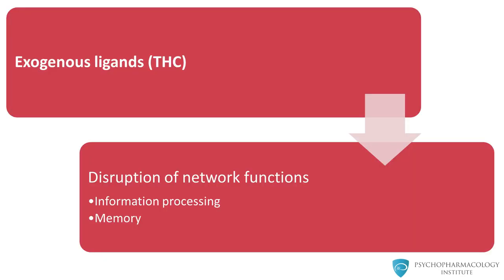The exogenous cannabinoid agonists such as THC do not recreate the fine-grained effects of the endogenous cannabinoids. The spatial and time profile of endogenous cannabinoid signaling is tightly controlled. In contrast, THC administered exogenously floods the system indiscriminately, and network functions such as information processing and memory are disrupted by exogenous CB1 agonists such as THC. Adverse effects on network dynamics underlie the psychological effects of cannabinoids.